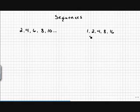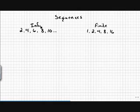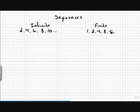Our second sequence is what's called a finite sequence — the opposite of infinite. A finite sequence actually has an ending point. You also see a different rule here: 1, 2, 4, 8, 16. We'll talk about the rules for these sequences later on.